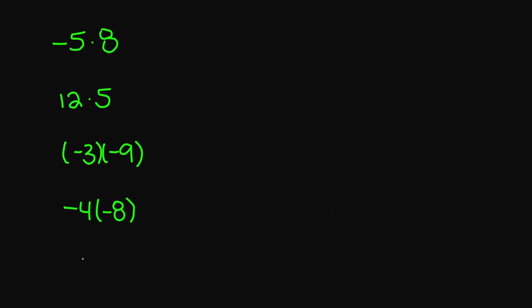Let's look at these examples. Negative 5 times 8 is going to give you a negative 40. 12 times 5 gives you a positive 60. Negative 3 times negative 9 gives you a positive 27. And negative 4 times negative 8 gives you a positive 32.